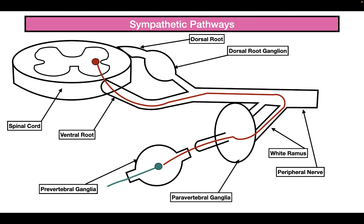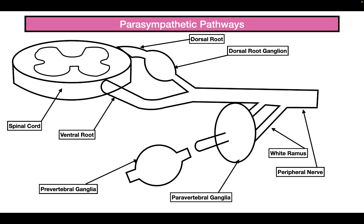Those are the two main pathways in which the sympathetic nervous system can take. Now, what about the parasympathetic nervous system? Just like the sympathetic nervous system, the cell bodies of the pre-ganglionic parasympathetic neurons are going to be found in the lateral horn.